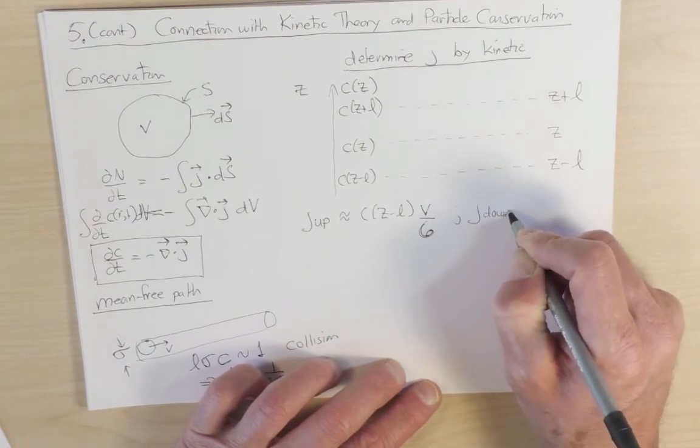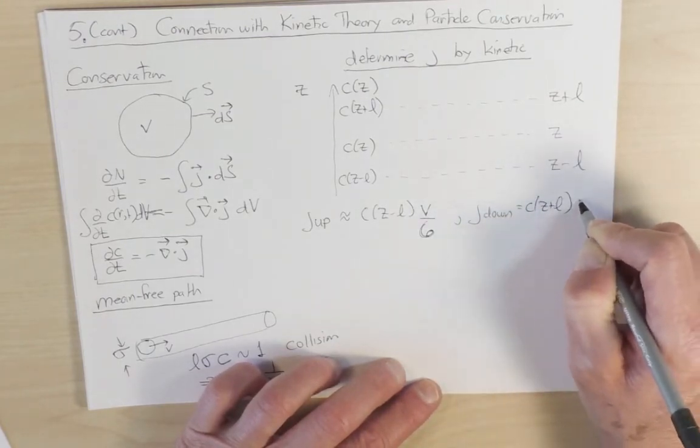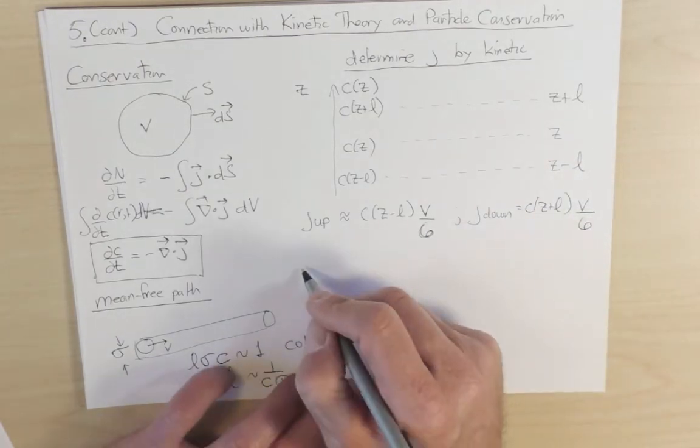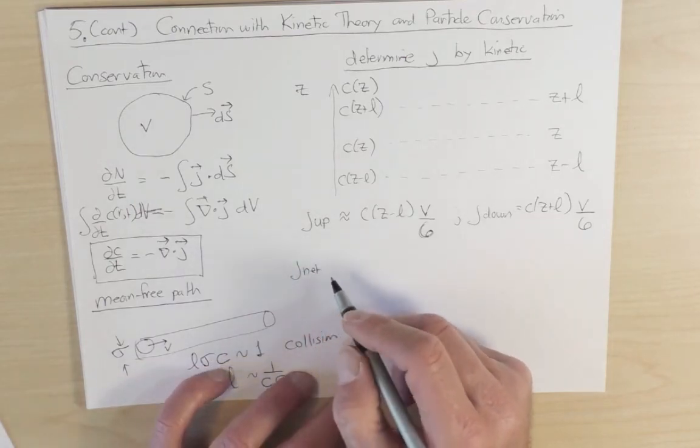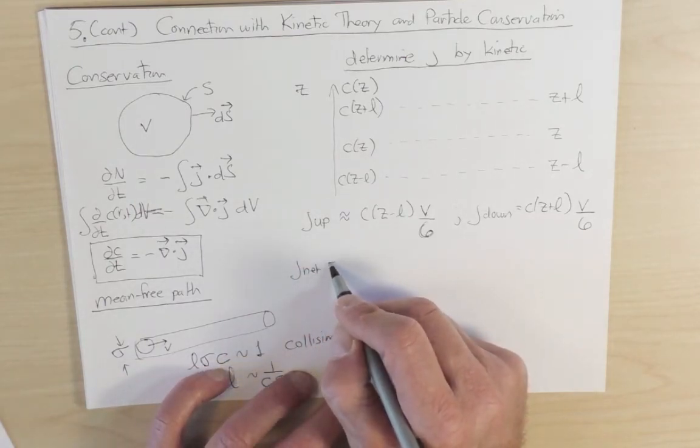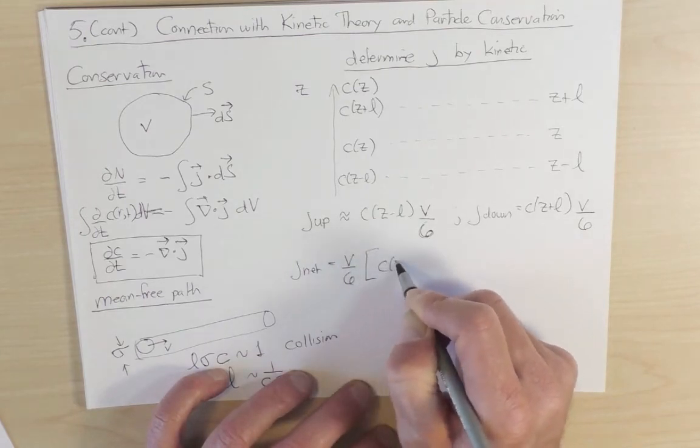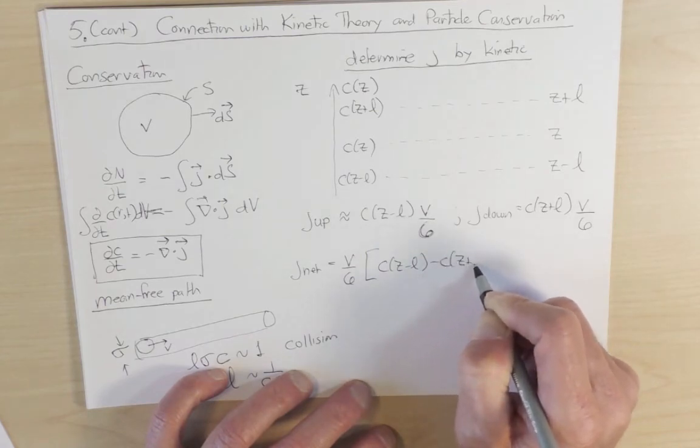By the same line of reasoning, j down is going to be c at z plus l, v over six. So the net current is just the difference in the up-going and down-going currents. And so this is going to be equal to v over six, c at z minus l, minus c at z plus l.